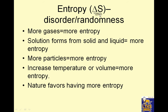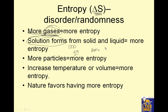The entropy symbol is delta S. More gases equal more entropy — that's the basic rule. Entropy is disorder and randomness, and gases have all kinds of crazy arrangements. When a solution forms from a solid in a liquid, that equals more entropy because there's more disorder. More particles equals more entropy — more particles would be a bigger mass, more disorder, more ways to arrange. An increase in temperature or volume also equals more entropy: higher temperature means particles move faster and scramble more, and more volume means more ways to arrange.